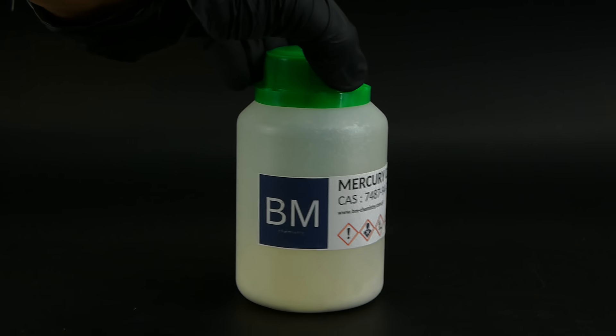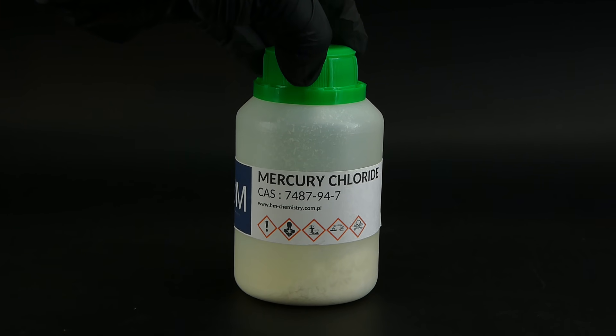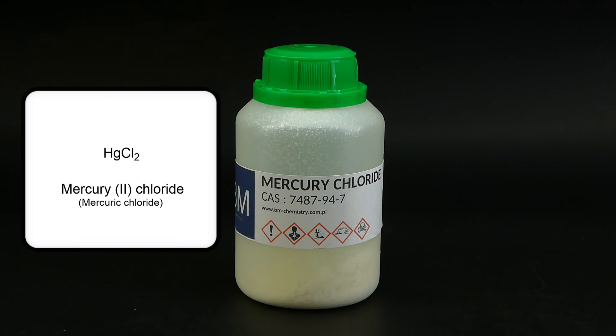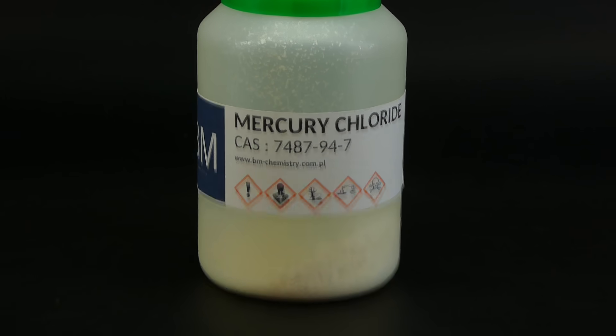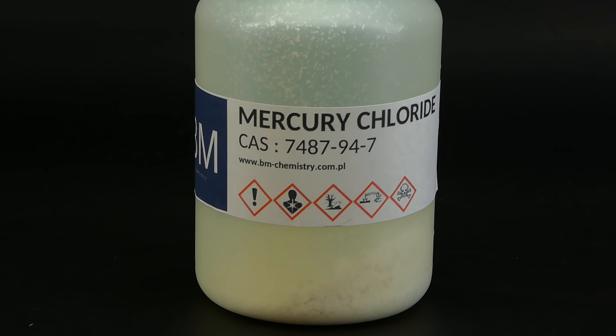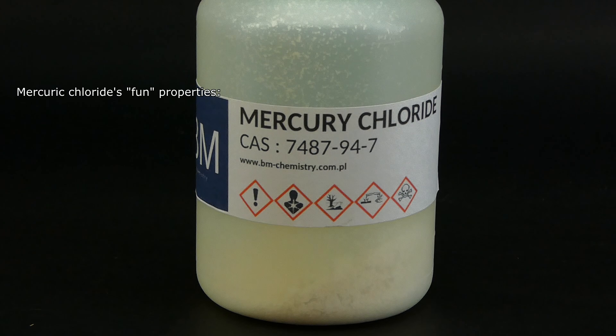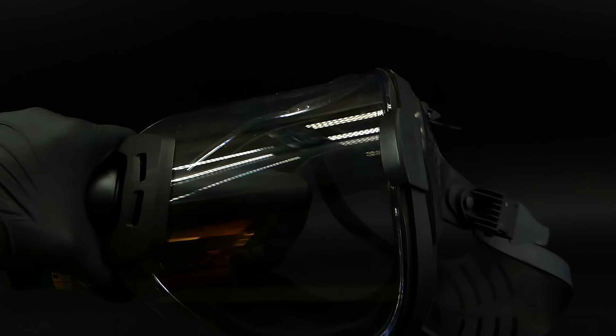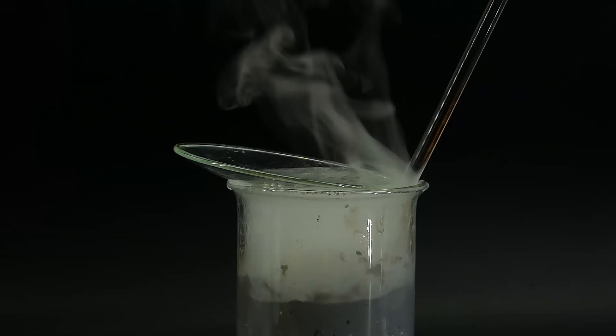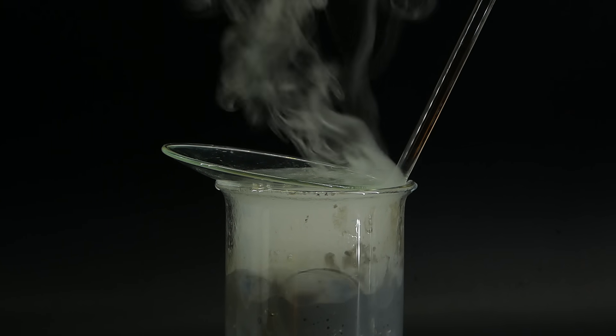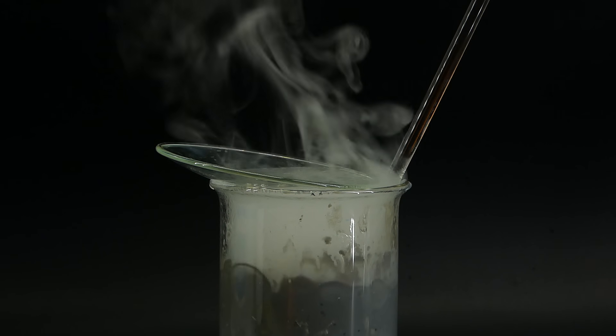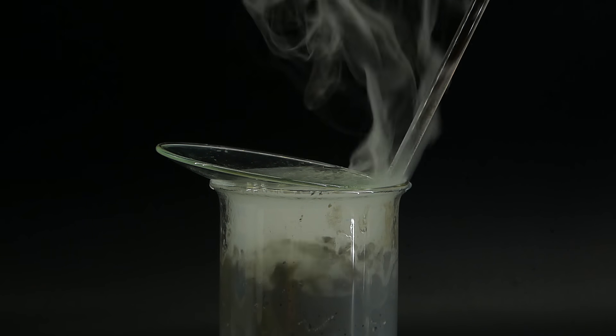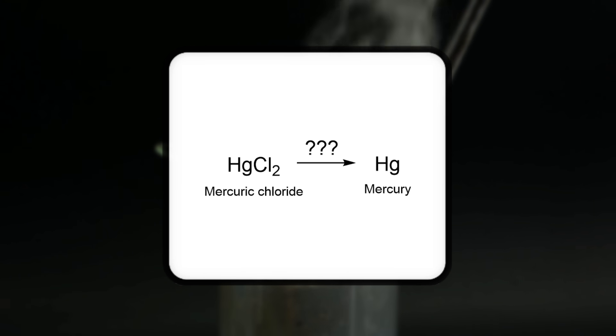Anyway, the chemical that I ended up getting is something called mercury(II) chloride or mercuric chloride, which just so happens to be one of the most toxic mercury compounds out there due to it being water soluble. It also has other fun properties, such as being corrosive, carcinogenic, and very bad for the environment. Due to that, I will have to employ a lot of safety measures so I don't die. And even with this problem somewhat figured out, I have to solve an even bigger one, which is how to turn the mercuric chloride back into mercury metal.